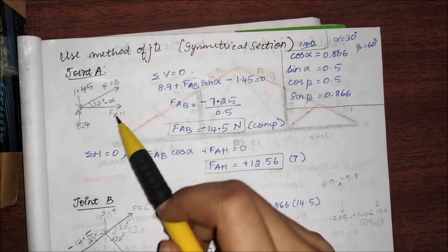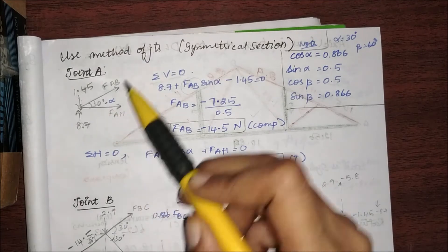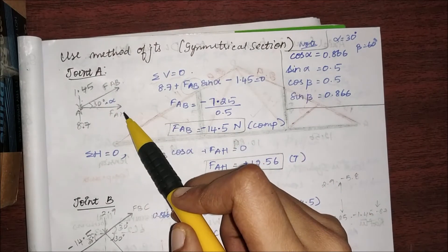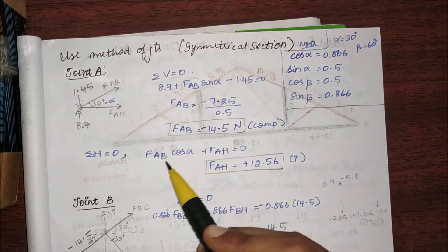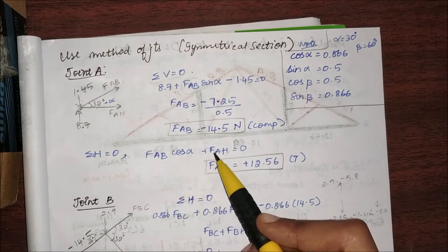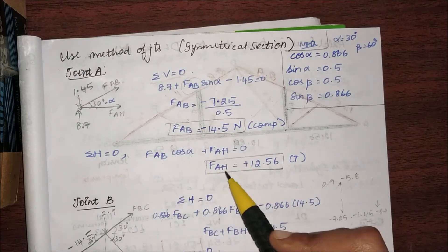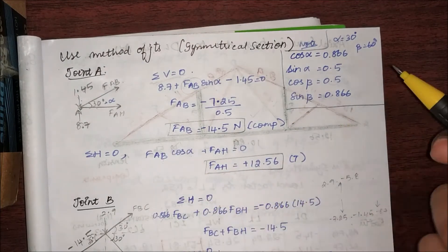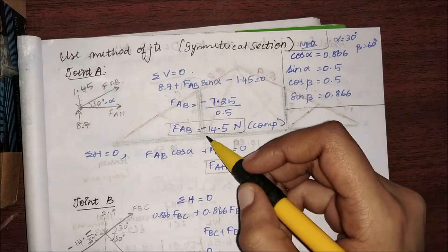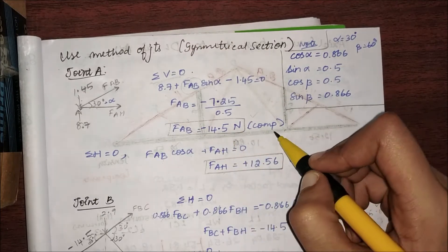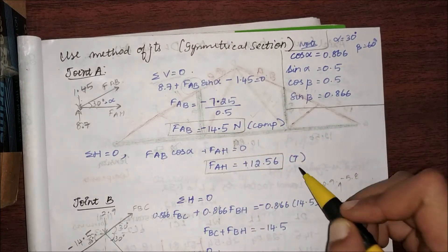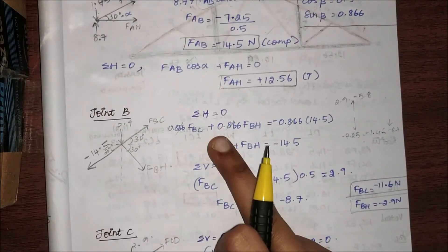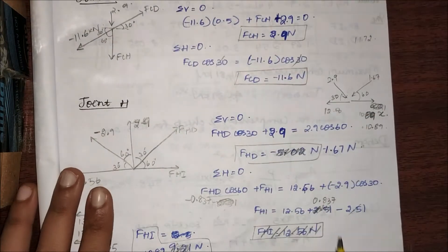When I equate all vertical forces to zero, only FAB is unknown, so I can find FAB. Then if I equate all horizontal forces: FAB·cos(θ) + FAH = 0. Since I already know FAB, I get FAH. If it is negative it is compression; if it is positive it is tension. Doing so for joints B, C, and H, I have found all the values for all the members in the truss in this direction.